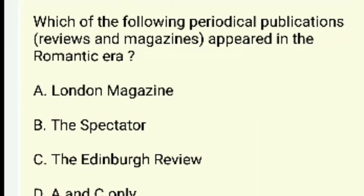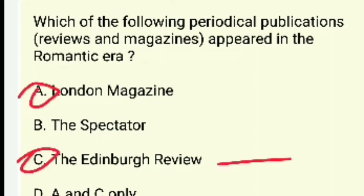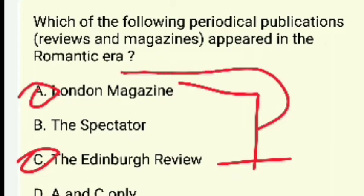Which of the following periodicals and magazines appeared in the Romantic era? The London Magazine, The Spectator, The Edinburgh Review, A and C only? The answer is A and C — the London Magazine and the Edinburgh Review were both in the Romantic era.